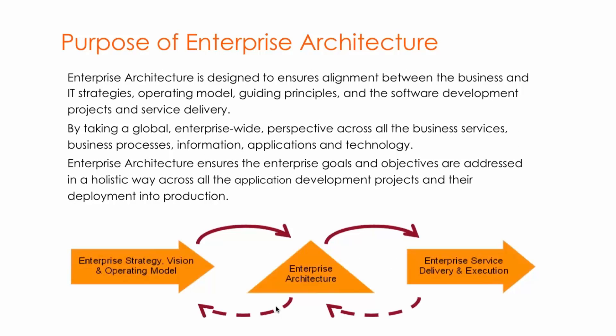The purpose of enterprise architecture is to align the business objectives and strategic goals. Every enterprise has a vision, a strategy, and an operating model, and you need to feed this information into the enterprise architecture model. Once done objectively and holistically, you will have capabilities that help with enterprise service delivery and execution. This creates a cycle where EA ensures that enterprise goals and objectives are addressed holistically across application development projects and across the organizational cycle.